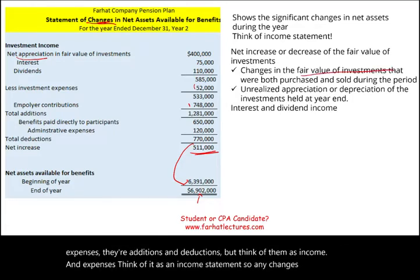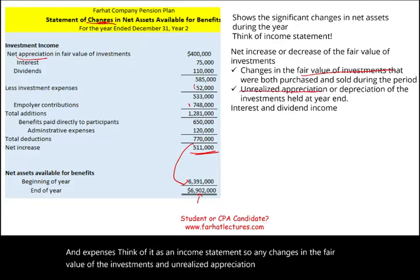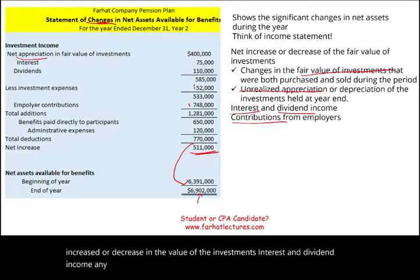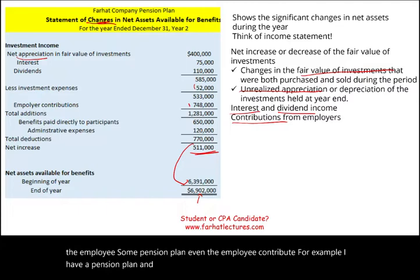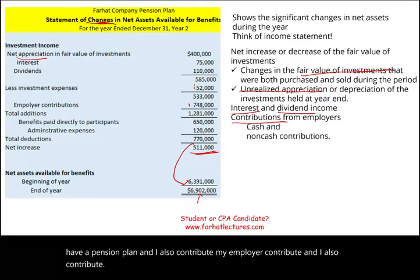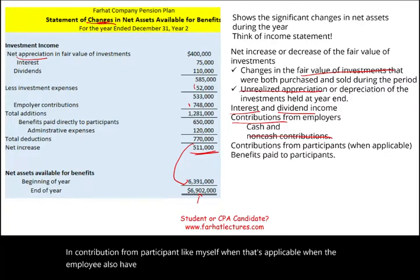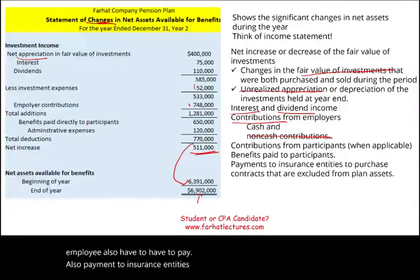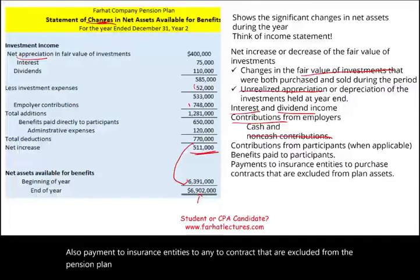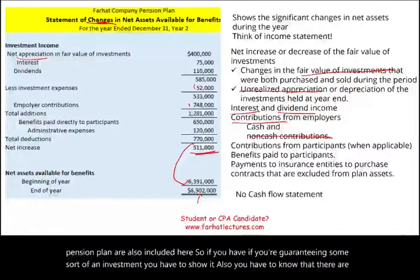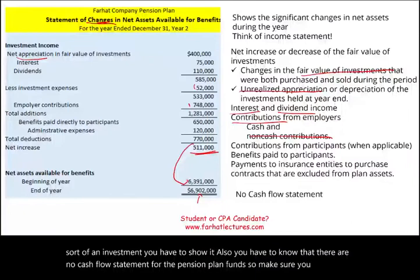Any changes in the fair value of investments — unrealized appreciation or depreciation — plus interest and dividend income, employer contributions, employee contributions (if applicable), and any payments to insurance entities are all captured here. Contributions should be divided between cash and non-cash, though usually it's cash. Also importantly: there is no cash flow statement for pension plan funds — this could be a multiple choice question on the exam.